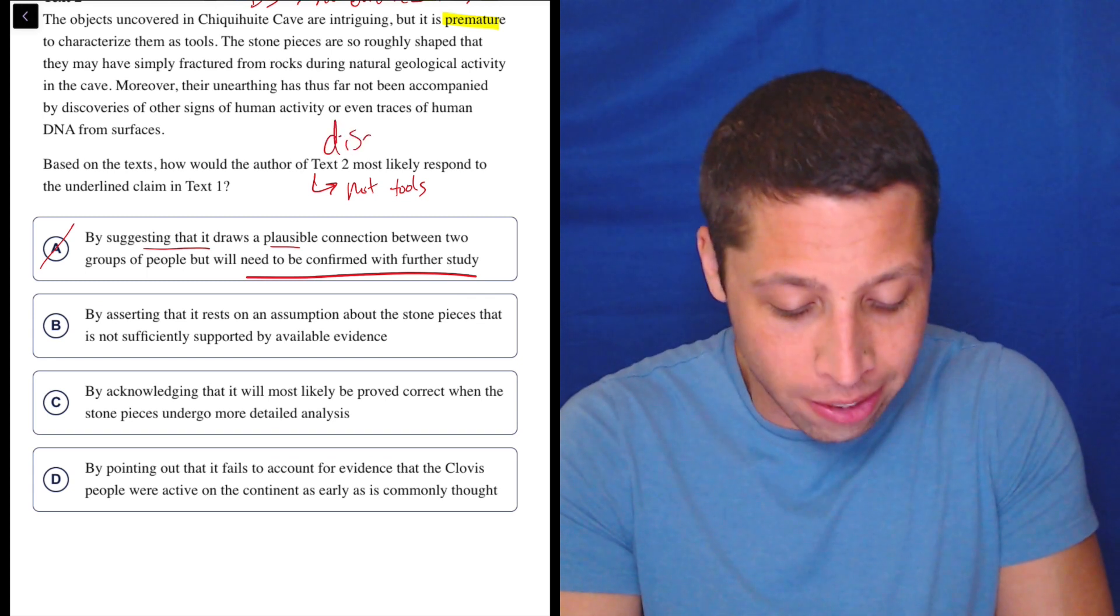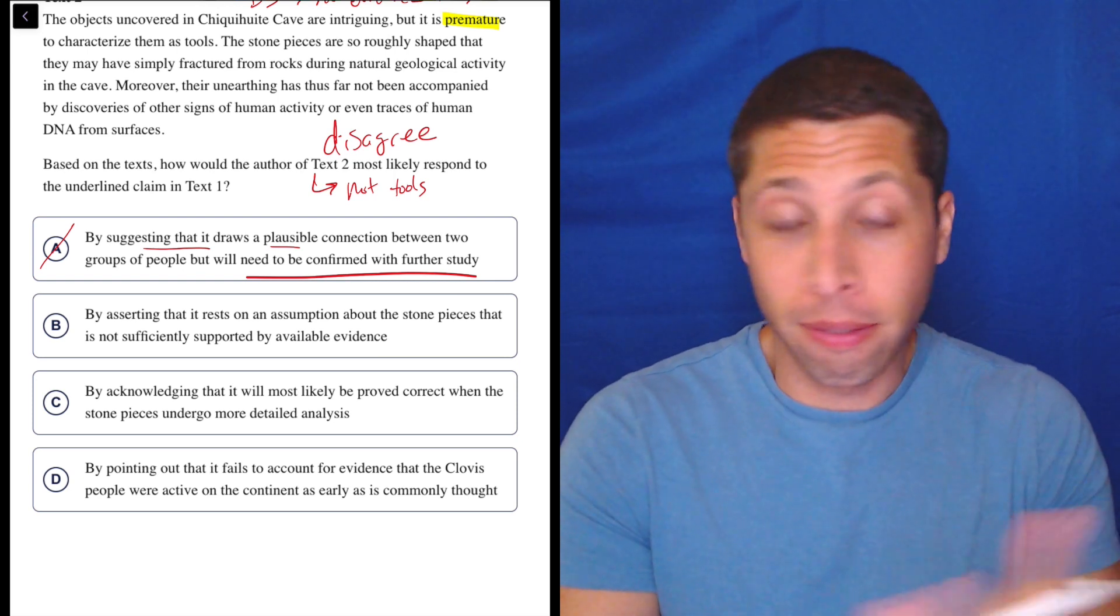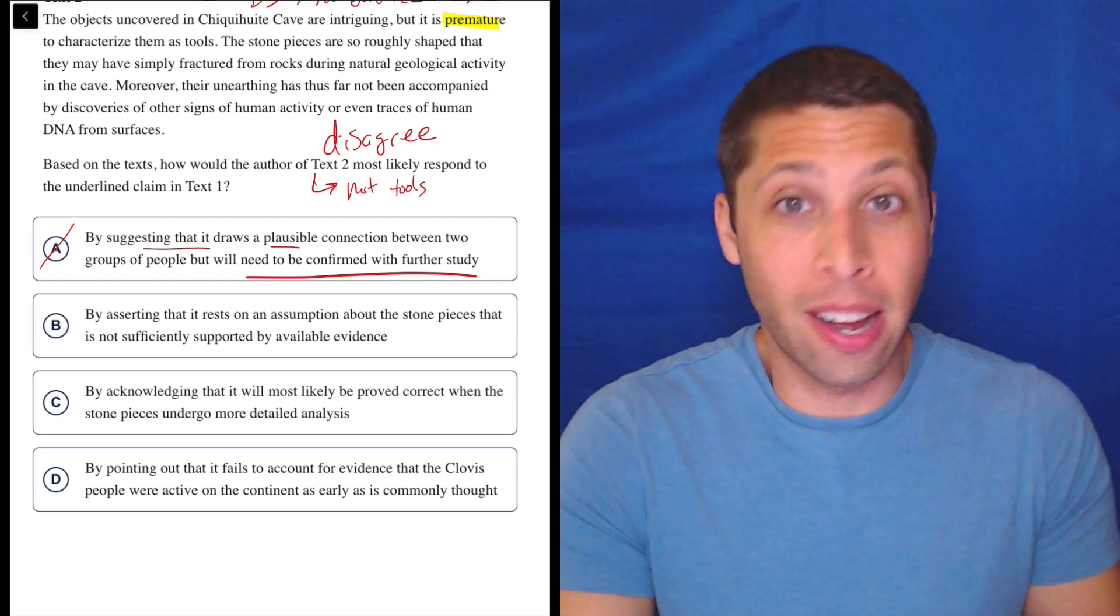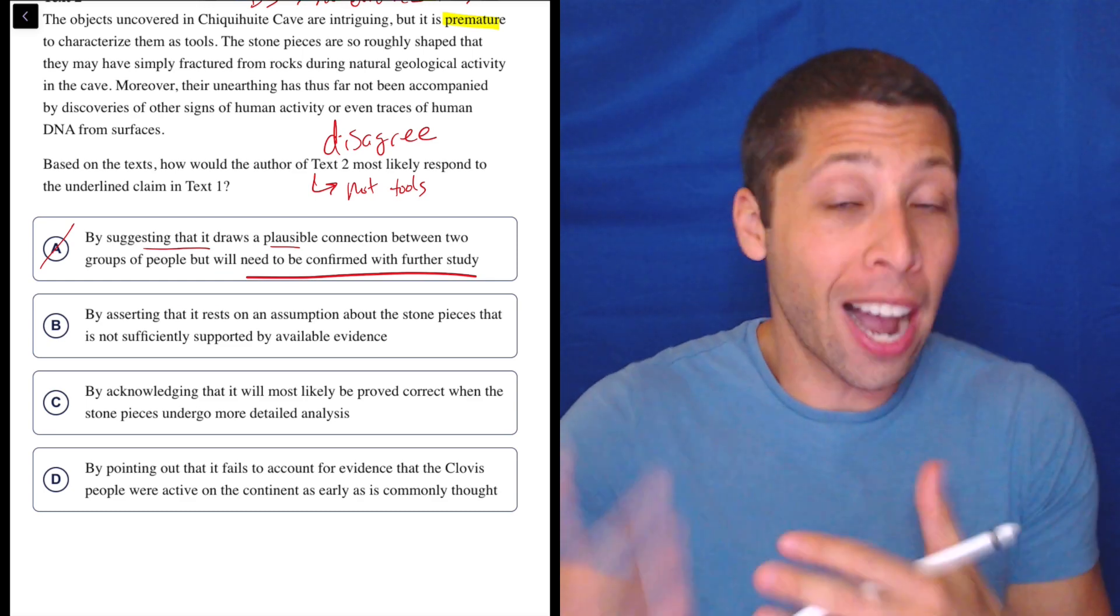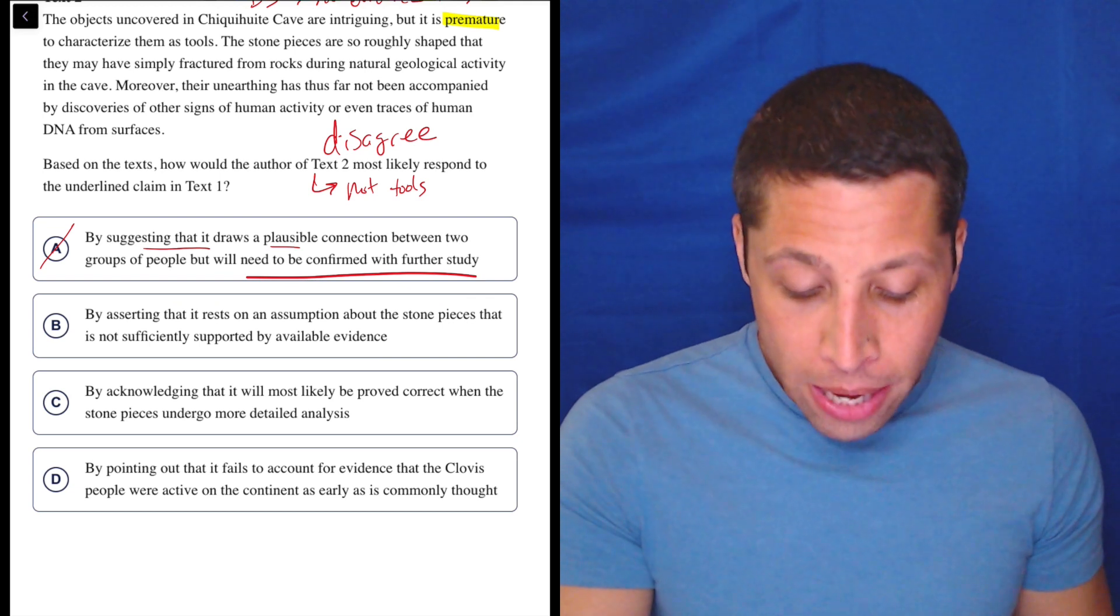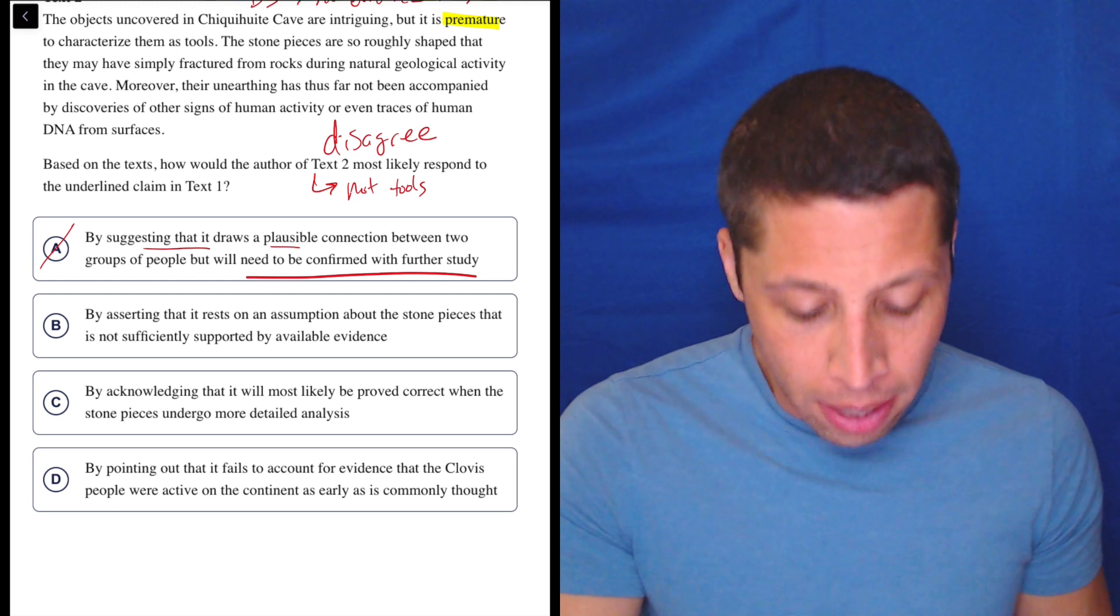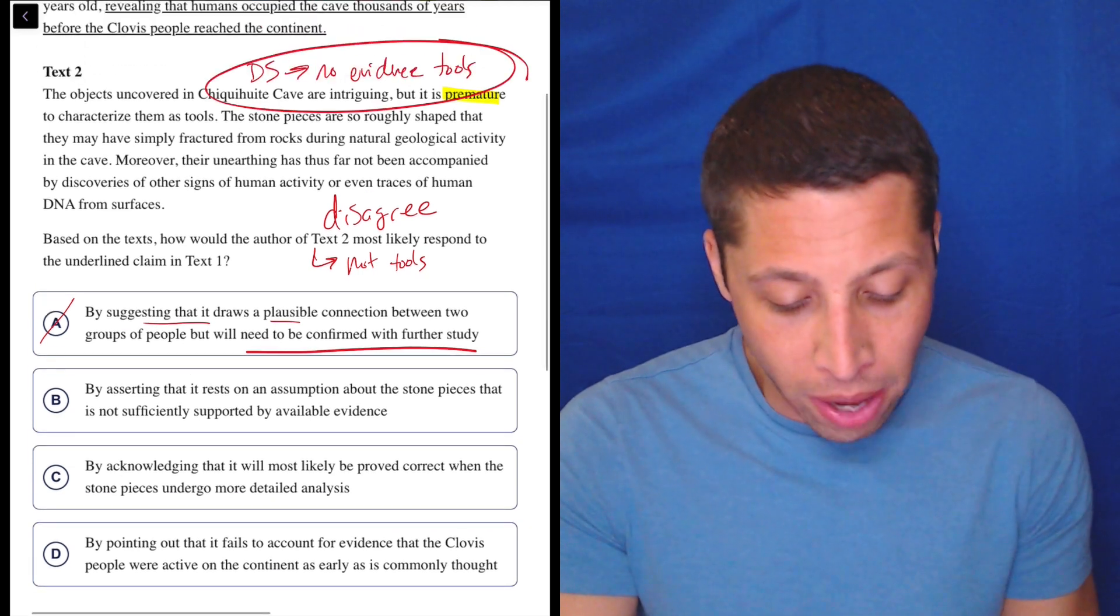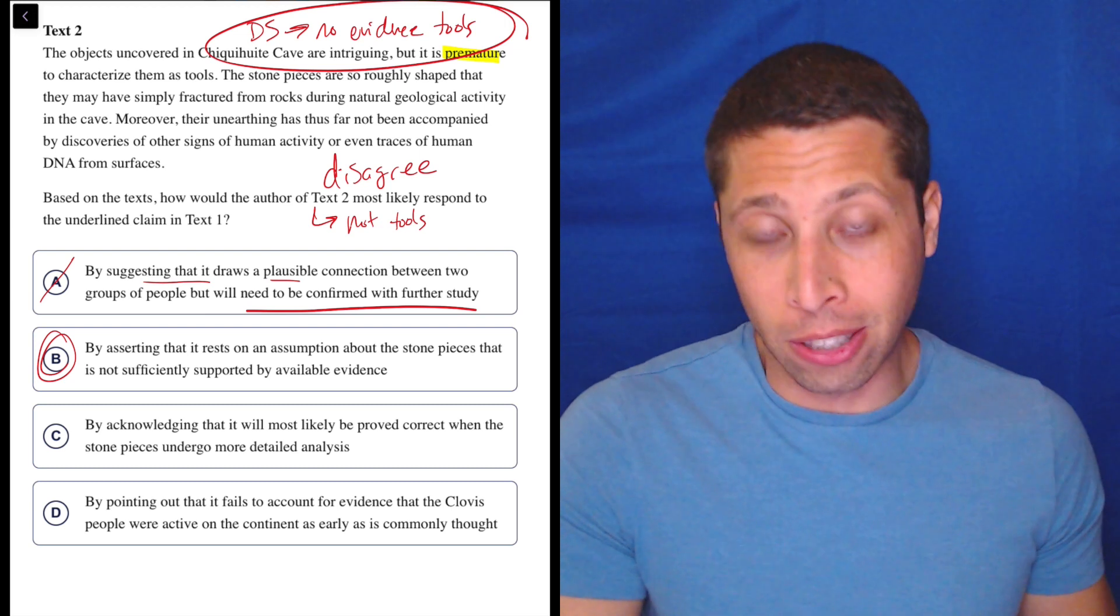This is a good example of how if you say like, okay, basically text two is going to disagree, right? That's the most simple dumb summary here. Then A is wrong because A is saying I kind of agree, right? I kind of agree, but we need more evidence. But I kind of agree is not the same thing as I disagree. So that's why it's wrong. B, by asserting that it rests on an assumption about the stone pieces that is not sufficiently supported by available evidence. Well, there's no evidence, like it's literally the same thing. This is definitely it, but let's look at C and D.